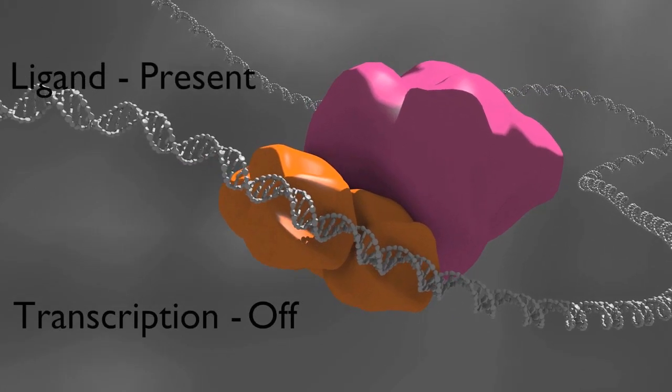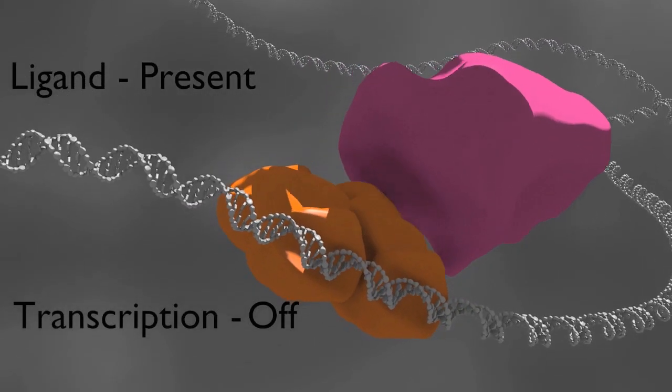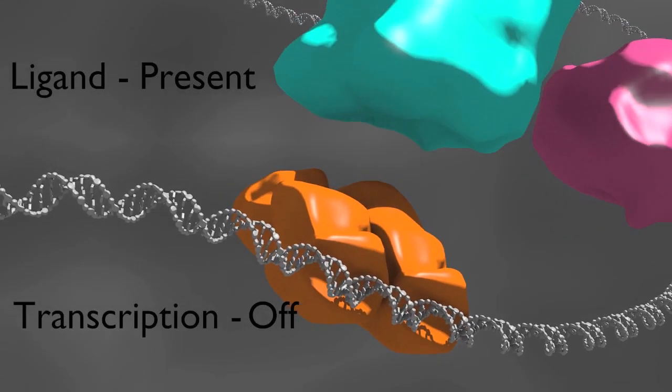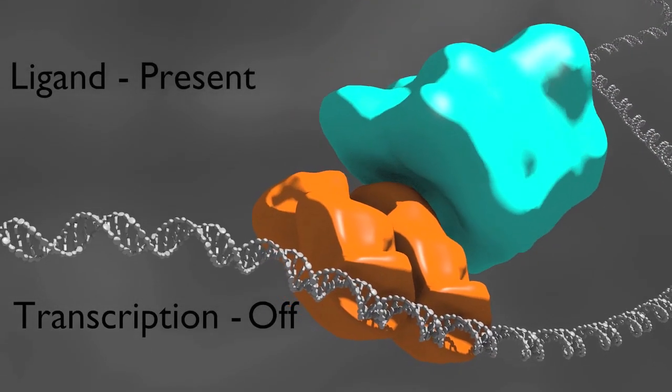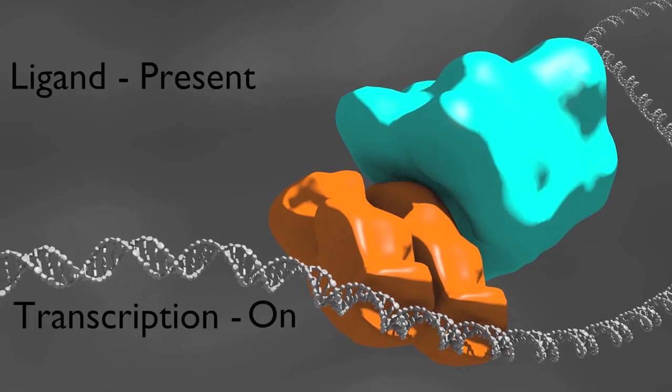When ligand binds, however, the ligand binding domain undergoes a conformational change that enables it instead to recruit a co-activator complex, which activates transcription of the downstream genes.